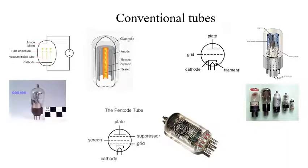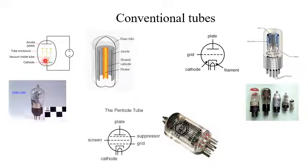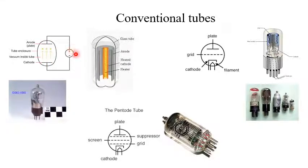Before going to the microwave tube, let us have a look at the conventional tubes. This is called the diode. It consists of a cathode with a filamentary arrangement — this is the heated cathode, this is the heater, there is a filament associated with it. The anode is connected to the positive polarity of the power supply and the cathode is connected to the negative polarity.